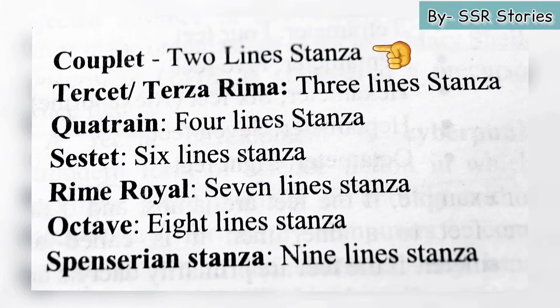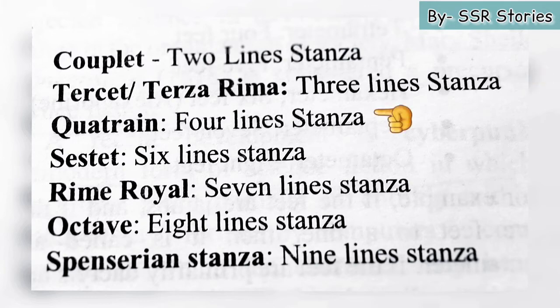Then there is tercet or terza rima, which means a three-line stanza. Then there is quatrain, which means four lines in a stanza. Then there is sestet, which means a six-line stanza.